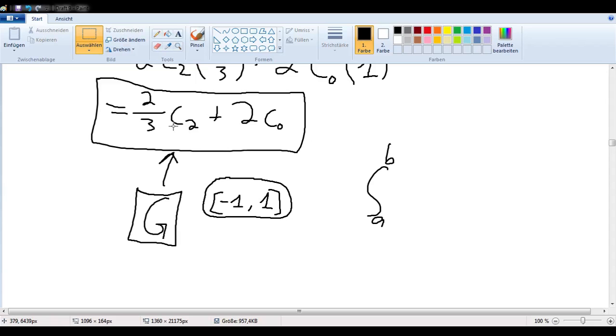In the previous video, we proved that our function g would work to give us an exact calculation of polynomials up to degree 3 between the boundaries of negative 1 and 1.